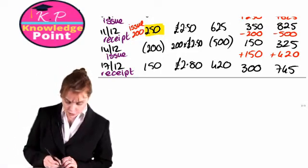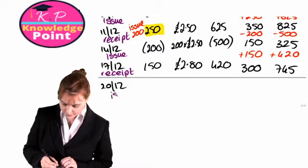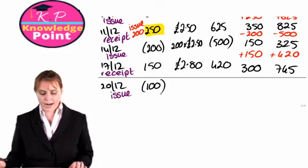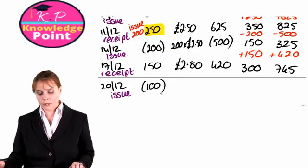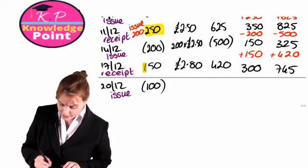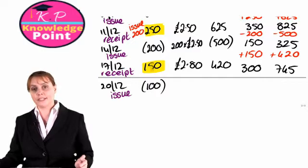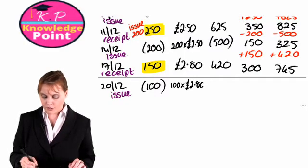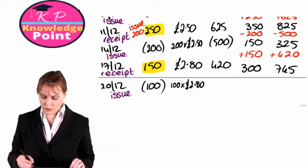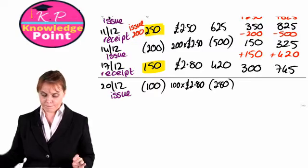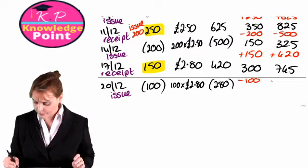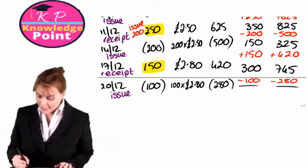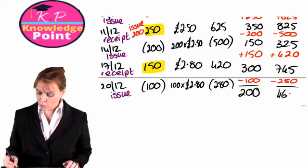Finally, on the 20th of December, we have an issue of 100 units. Our most recently purchased units were the 150 we purchased on the 17th of December, so we use those for our issue. We have 100 units at £2.80 each, giving a total issue value of £280. That leaves us with 200 units with a total value of £465.